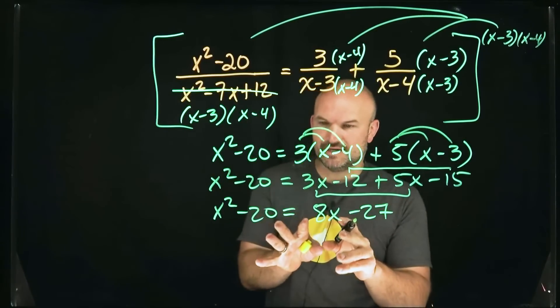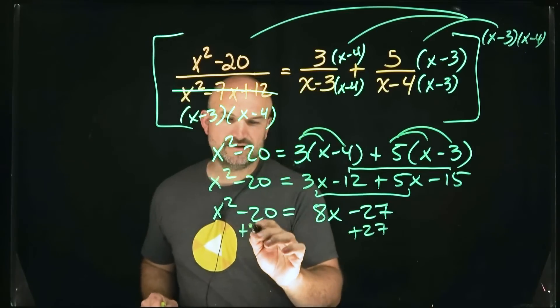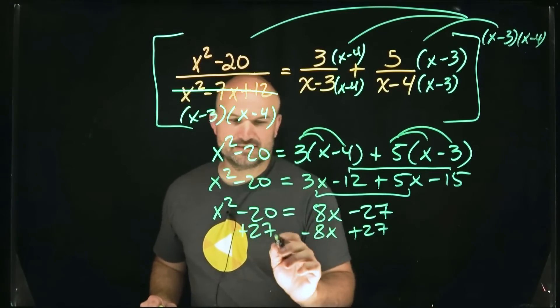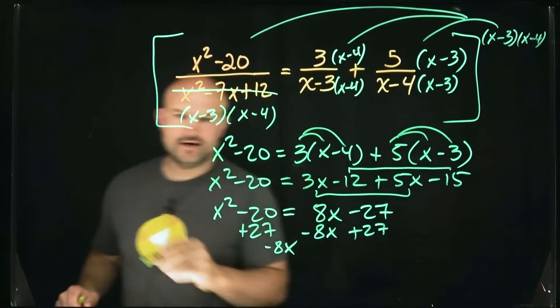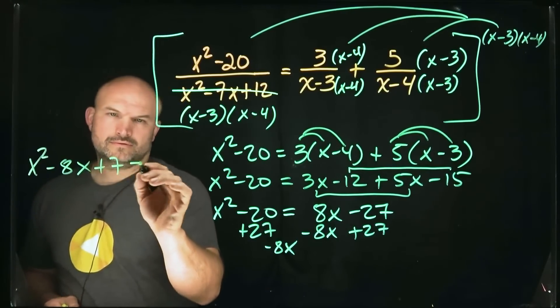Okay, so now I have my terms. I'm going to go ahead and get everything over to the right side. So I'll add 27 to both sides and I'll subtract the 8x. So I'll subtract the 8x. And now I'm going to be left with, okay.